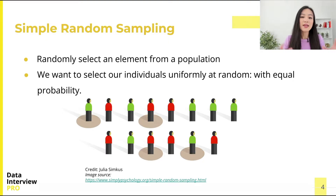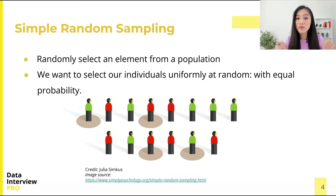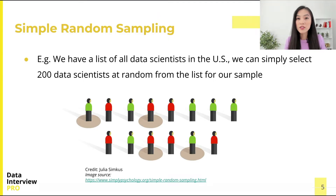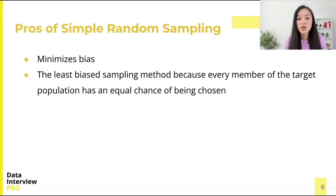The hope is that by selecting our individuals from the larger population without preference, we will likely get a sample that is representative of the larger population. For example, assuming we have a list of all data scientists in the US, we can simply select 200 data scientists at random from the list for our sample.